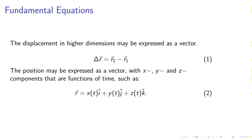The displacement in higher dimensions may be expressed as a vector. Delta R equals R2 minus R1. The position may be expressed as a vector with X, Y, and Z components that are functions of time. This is R equals x(t) I hat plus y(t) J hat plus z(t) K hat.